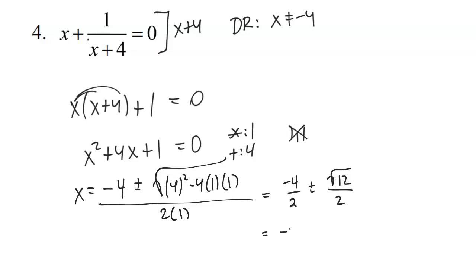Now, I need to continue simplifying here. Negative 4 divided by 2 is negative 2 plus or minus the square root of 12. Well, 12 is 4 times 3. Now, just real quick, it's also 2 times 6. But 2 or 6, neither one of those are perfect squares. So I don't care that it's 2 times 6. The reason I chose 4 times 3 is that 4 is a perfect square. And so this becomes 2 times the square root of 3 divided by 2. And so those 2s are going to cancel. And that's going to give me the two answers, negative 2 plus or minus the square root of 3. Neither one of those is extraneous since neither one of them equal to negative 4. And so there are my two solutions.